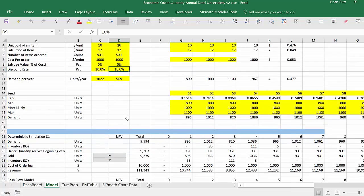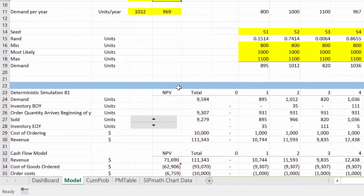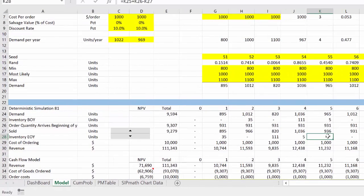So given those demands, we come down here and we say, how much do we order? We're going to order 931 every year because the demand, the inventory at the end of the year here is only 35, so obviously I want to order some more. 111 here, I need to order some more. By year five, in this particular simulation, I've sold all my product. I don't have any product at the end of the year.